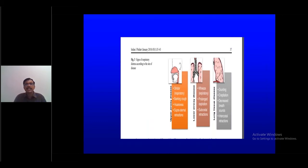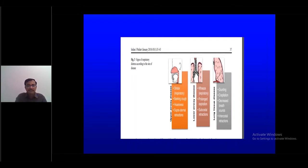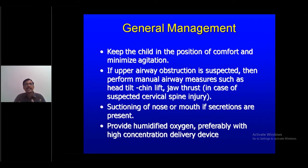Upper airway disease presents with inspiratory stridor, barking cough, hoarseness of voice, and suprasternal retraction. Lower airway disease presents with wheezing, prolonged expiration, and subcostal retraction. Parenchymal disease presents with bronchial breath sounds, crepitations, decreased air entry, and intercostal and suprasternal retractions. General management for any respiratory distress includes supplying oxygen through a high-concentration delivery device such as a non-rebreather mask.